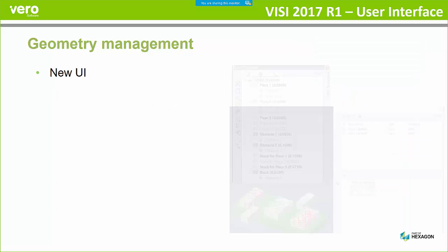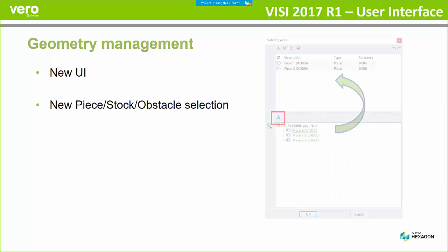Moving on to the geometry management, the interface has changed. It's slightly different for when you're actually selecting the pieces of geometry that you want to machine or work to. The CAM navigator and the model manager is the same, but the new piece, stock, and obstacle selection interface gives you a list of available geometry — faces or anything like that — that you want to select from the bottom half of the dialog box. You just move them up to the top and then you can actually change them on the fly if you wanted to.